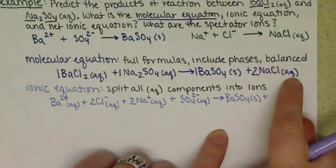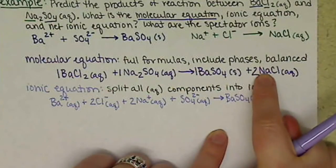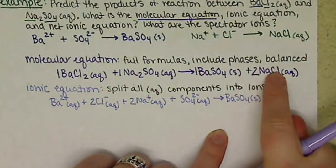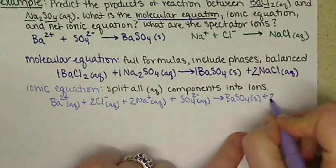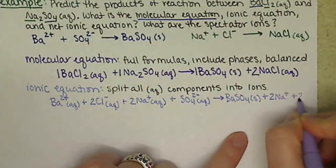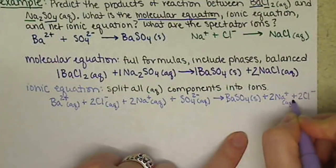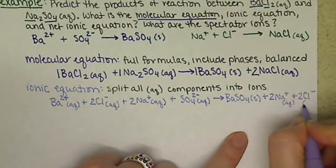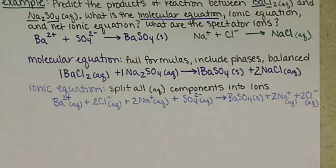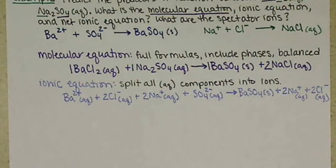NaCl is aqueous, so it splits apart into 2 sodium ions and 2 chloride ions. And that is our ionic equation.